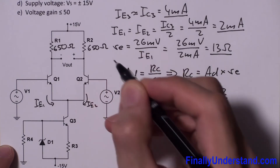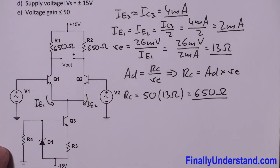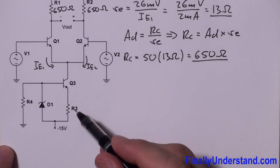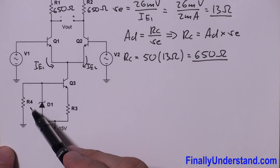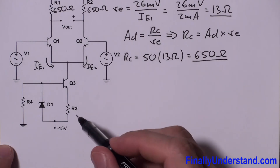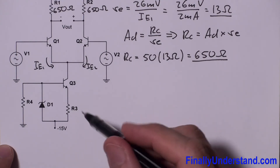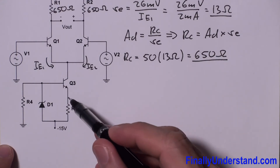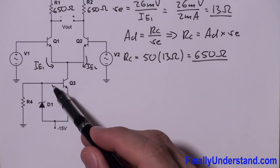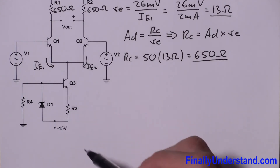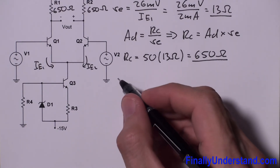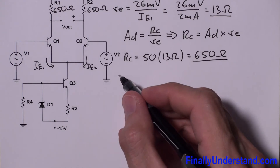Now we're supposed to find the values of resistors R3 and R4. First, in order to find R3, I need to find the voltage across resistor R3. To do that, I need to find the voltage at the base of transistor Q3. To do so, I simply write the KVL equation.